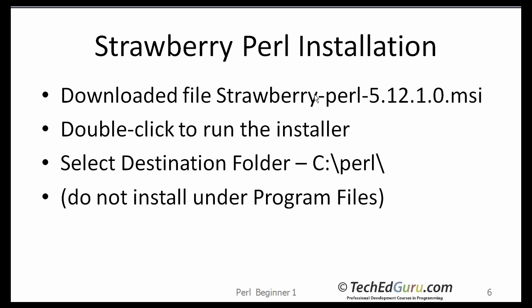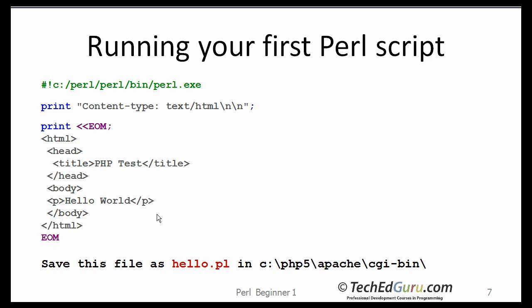When you download the file — I am assuming you are on a Windows operating system — you will get a file named something like strawberrypearl-51210.msi. Simply double-click on the file to run the installer, and the only thing you need to do is select the destination folder. I suggest that you install Perl in the C drive. If you choose to install Perl somewhere else, you will have to change my source files accordingly. Do not install under Program Files.